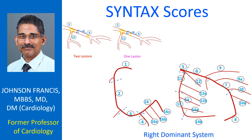SyntaxScore 1 is a scoring system for coronary lesions based on the online calculator available at syntaxscore.org. It is a tool for assessing the complexity of coronary artery disease. The online version is updated when new data from the follow-up of the Syntax trial is available. The latest version is 2.28 as of 10th August 2023.